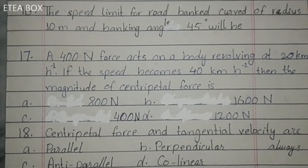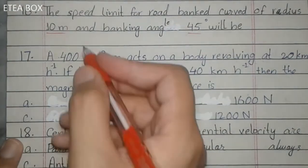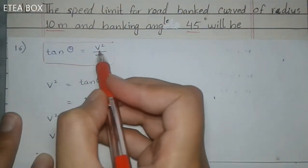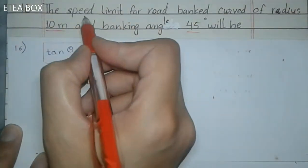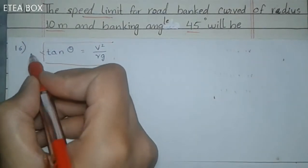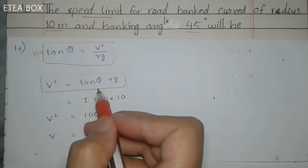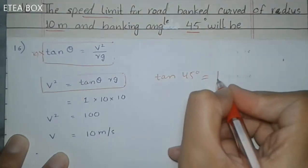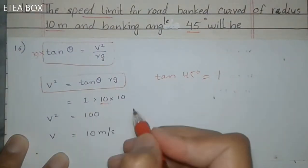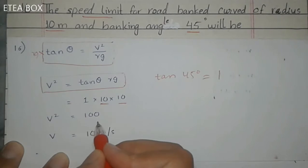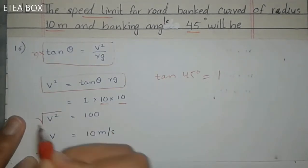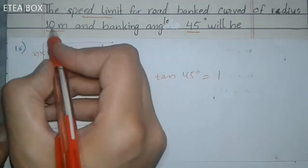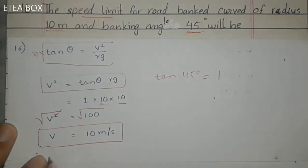Next MCQ: The speed limit for a road banked curve of radius 10 m and banking angle 45°. Using the banking formula: tan θ = v² / rg. So v² = tan(45°) × r × g = 1 × 10 × 10 = 100. Taking the square root, v = 10 m/s. The speed limit is 10 m/s.